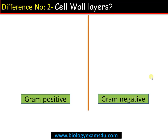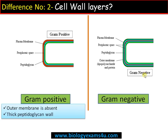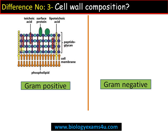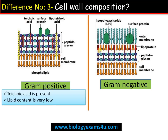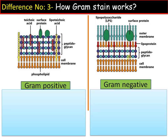Difference number two regarding the cell wall layers: in the case of gram-positive bacteria, on the outside of the plasma membrane there is a thick peptidoglycan wall. Whereas in the case of gram-negative bacteria, on the outside of the plasma membrane there is a thin peptidoglycan wall that is followed by an outer membrane made up of lipopolysaccharides and proteins. So lipid content is high in gram-negative bacteria and teichoic acid is absent.